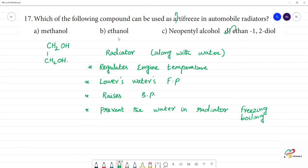So this is the use of ethylene glycol. The answer is ethane 1,2 diol. What is an antifreeze in automobile radiators? How it works? It lowers freezing point and raises boiling point.